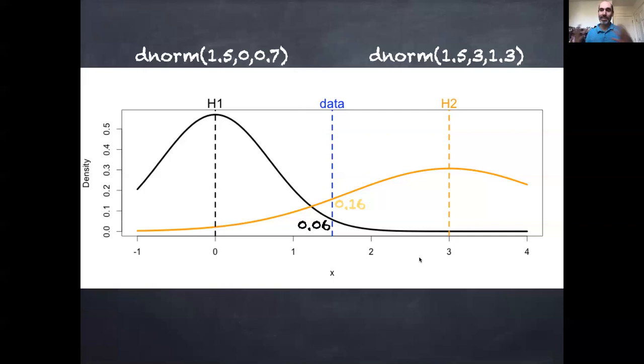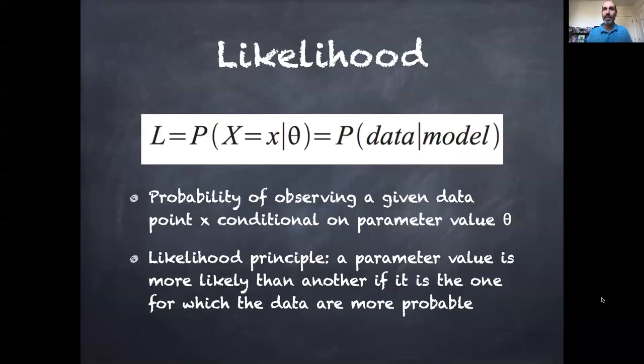And underlying what we've done here intuitively is this statistical principle of the likelihood. And the likelihood says, the likelihood is the probability of observing a given data point x conditional on some parameter value theta. So in this case, we were looking what's the probability of observing the value 1.5 given two alternative parameter choices, mean of 0 and a standard deviation of 0.7 or a mean of 3 and a standard deviation of 1.3.